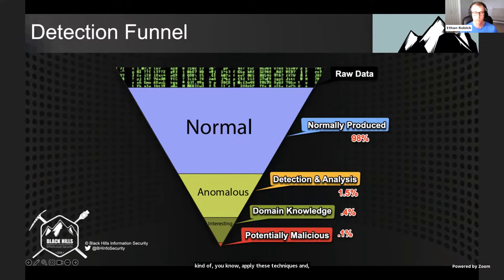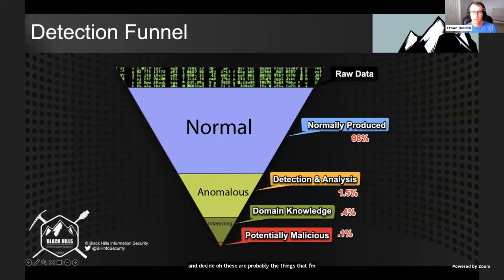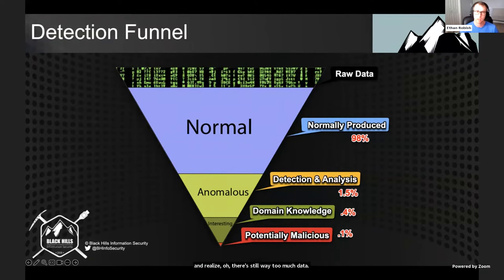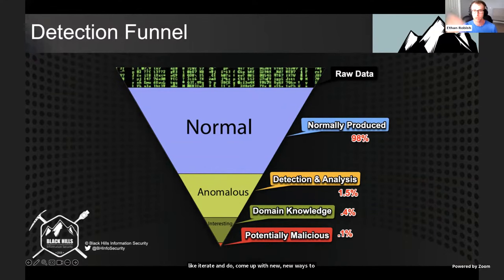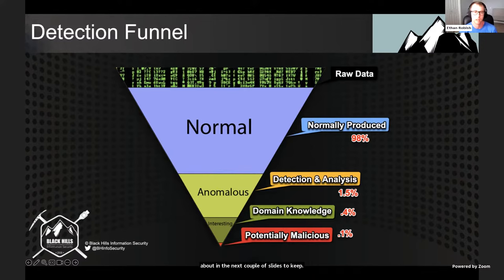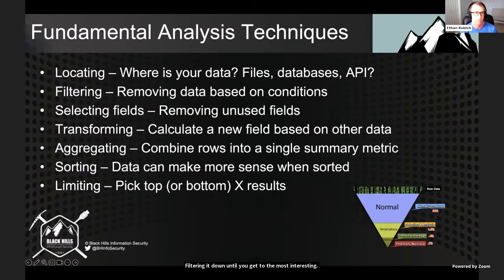When you're threat hunting, you come up with an initial hypothesis and decide what things you'll use to filter down to events of interest. You might get to the end of your initial hypothesis and realize there's still way too much data. There's nothing saying this can't be applied again — iterate and come up with new ways to filter the data based on what you're seeing in the results, until you get to the most interesting data at the tip of the funnel — that 'potentially malicious' entry.